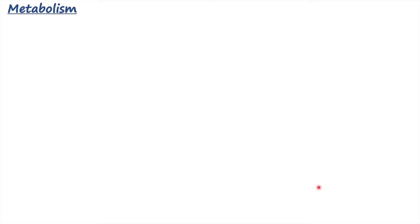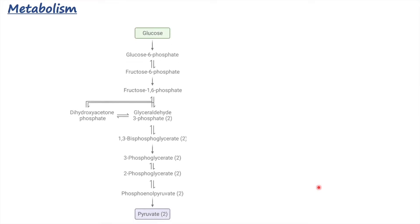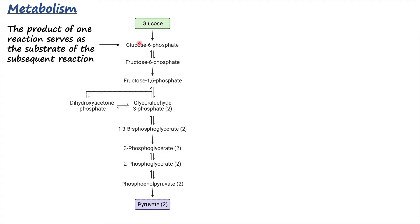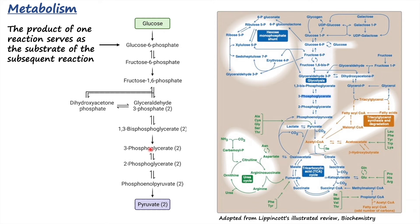Here we have a chemical reaction — this is a pathway of glycolysis. Don't pay attention to the glycolysis pathway right now because we are definitely going to talk about that in subsequent videos. In any of these chemical reactions in metabolism, the product of one reaction — for example, glucose-6-phosphate — serves as the substrate of the subsequent reaction. There are also different pathways which can intersect with one another.